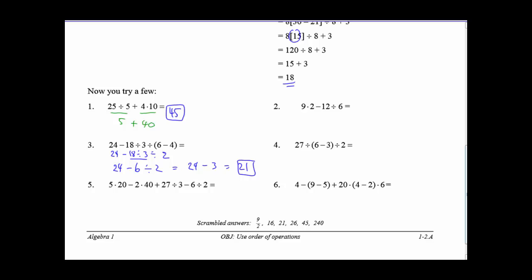One last one, a little bit bigger than number 5. We have no parentheses, no exponents. We do have multiplication and division and subtraction. So let's do the multiplication left to right. 5 times 20 gives us 100. Negative 2 times 40 gives us negative 80. 27 divided by 3 gives us 9. And negative 6 divided by 2 gives us negative 3. And then all we have is addition and subtraction. We're going to go from left to right. So 100 minus 80 is 20 plus 9 minus 3. 29 minus 3 is 26.